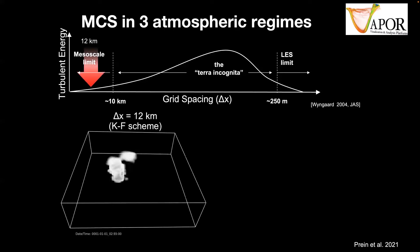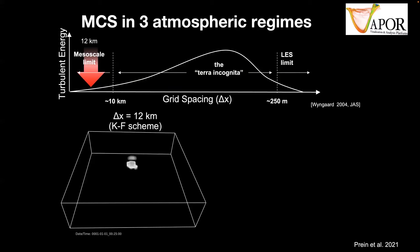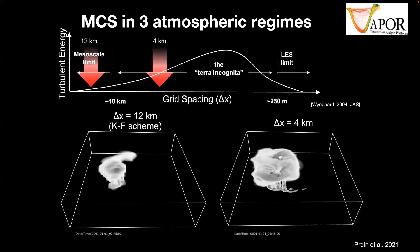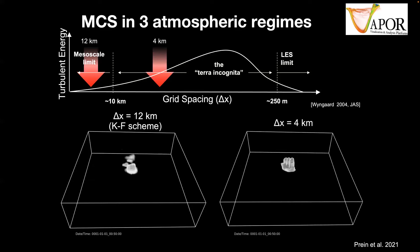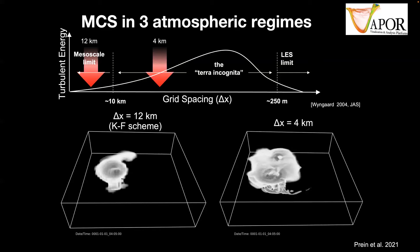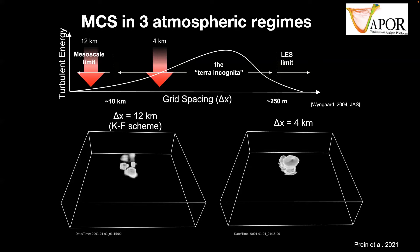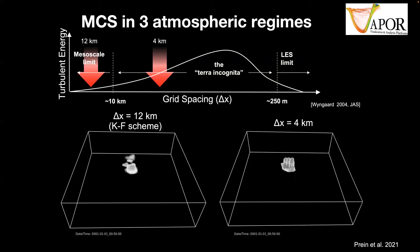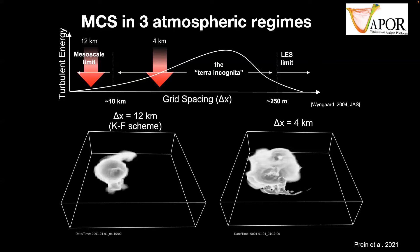These are idealized WRF simulations initialized with a pre-MCS sounding, triggering convection to see what happens. At 12-kilometer grid spacing, the result is very disappointing — just a single-cell thunderstorm advected by the flow, nothing resembling an MCS. Going to 4 kilometers, with the deep convection scheme turned off, you get a real regime shift: a cold pool develops, the frontal zone triggers more updrafts, the cloud shield and system movement are very different. There's really a step improvement going from 12 to 4 kilometers, even if it's not perfect.